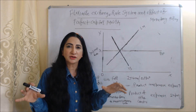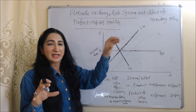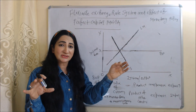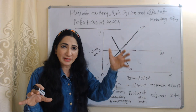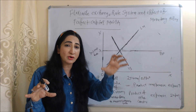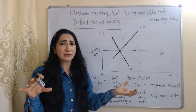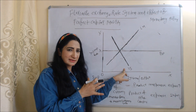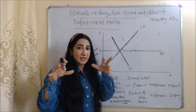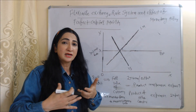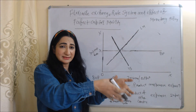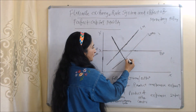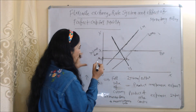Now we will see the effect of monetary policy under the flexible exchange rate system. Under flexible exchange rates, the central bank or government will not interfere, because the exchange rate is decided by currency demand and supply. We also assume perfect capital mobility. Under monetary policy, the central bank increases money supply, so the LM curve shifts from LM to LM1, and our new equilibrium point is E1. At this point, our interest rate falls from OR to OR1.